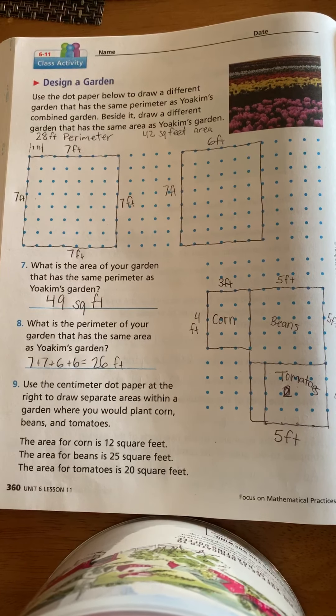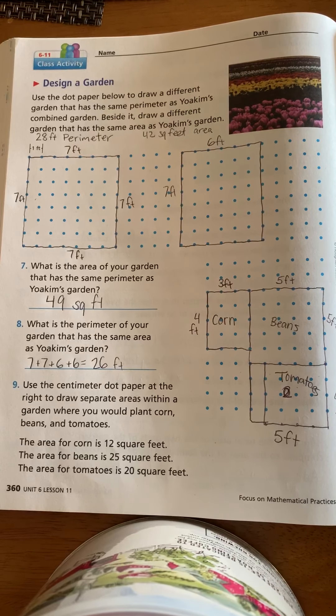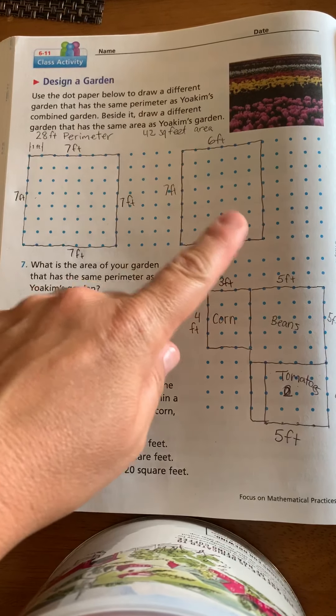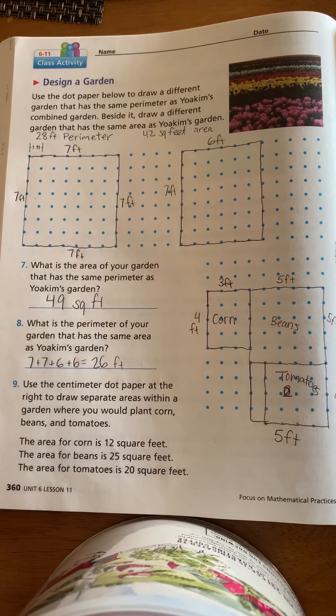And it says, what is the perimeter of your garden that has the same area as Joaquin's garden? Well, this one will be 7+7+6+6. So it'll be 26 square feet.